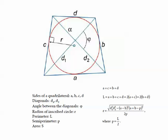And the radius of the incircle is given by this formula, where p is L by 2.